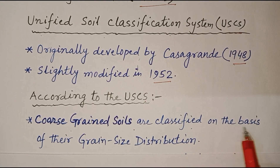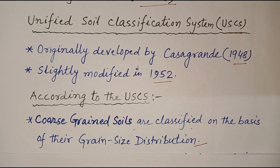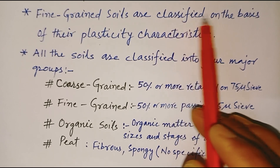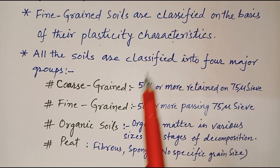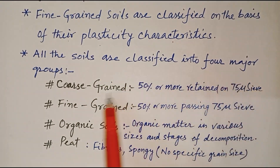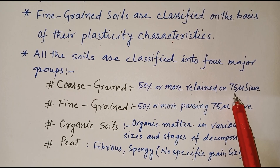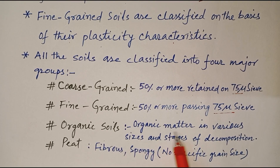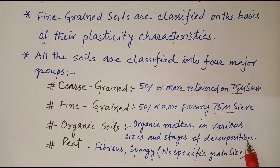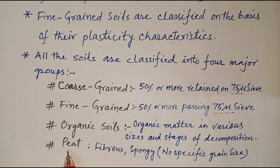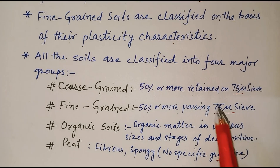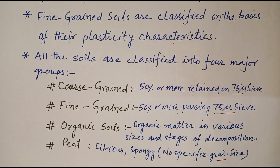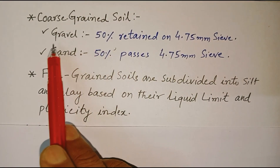According to the Unified Soil Classification System, coarse grain soils are classified on the basis of their grain size distribution, and fine grain soils are classified on the basis of their plasticity characteristics. All soils are classified into four major groups: coarse grain soil (50% or more retained on 75 micron sieve), fine grain soil, organic soil (organic matter in various sizes and stages of decomposition present in the soil), and peat, which has fibrous spongy material with no specific grain size. As per USCS, these four types of soil are classified into groups.